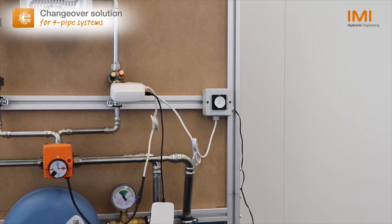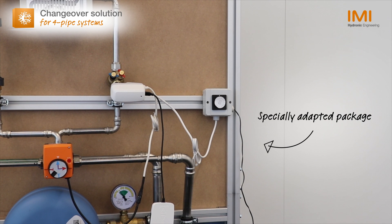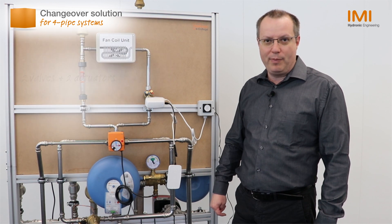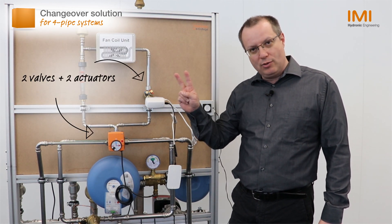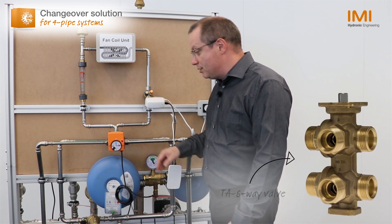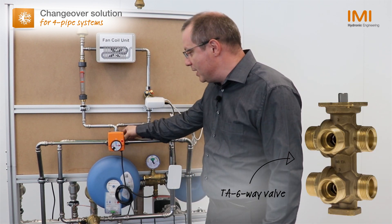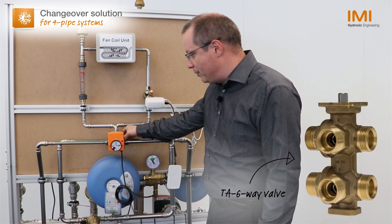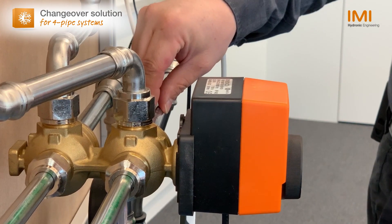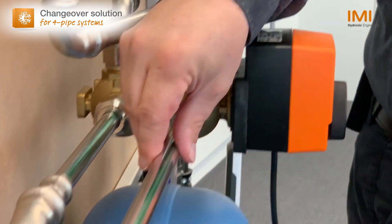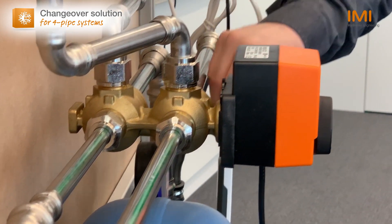To be more precise, the specially adapted package for changeover systems from IMI Adronic Engineering is made of four parts: two valves and two actuators. First, a six-way control valve that allows to perform the switch between the cooling and the heating network and vice versa.